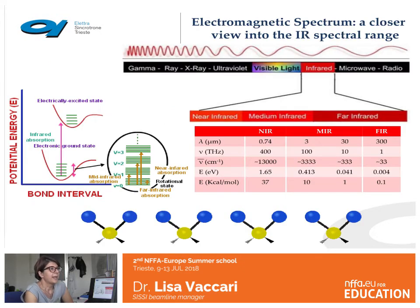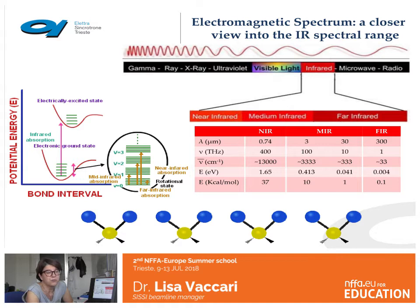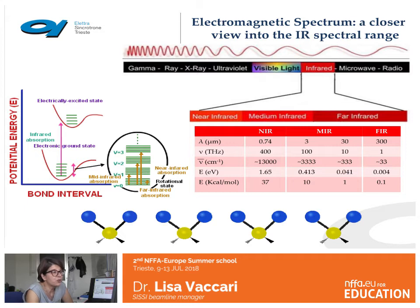Infrared light is a very broad region that extends from the visible to the microwaves. That means the energies involved range from about one eV down to some milli-electron volts, spanning wavelengths from hundreds of nanometers to hundreds of micrometers or even millimeters. Energies in this region are mostly not sufficient to excite electronic transitions. Conversely, the infrared regime is adequate to promote vibrational and rotational transitions, so infrared interaction with matter can be exploited to study molecular vibrations.